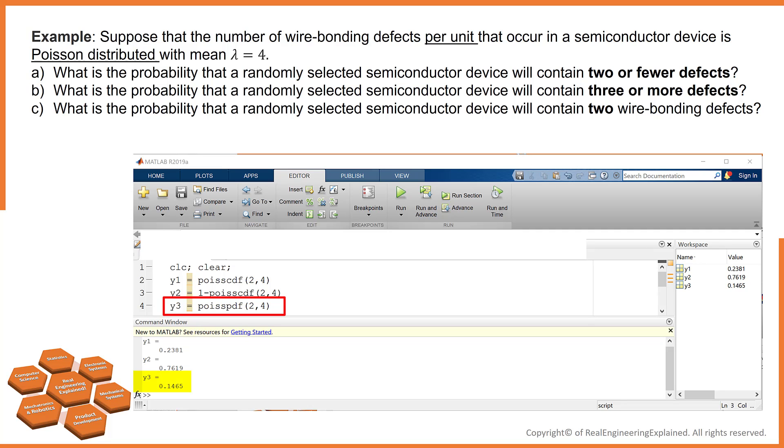All right, in this video, we covered the Poisson distribution. In the next video, we are going to talk about other important discrete and continuous distribution.